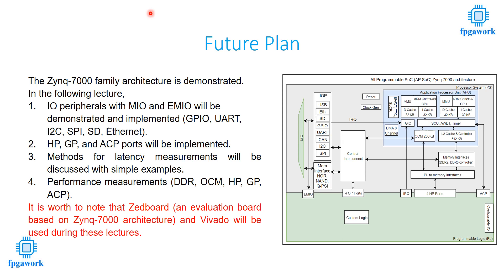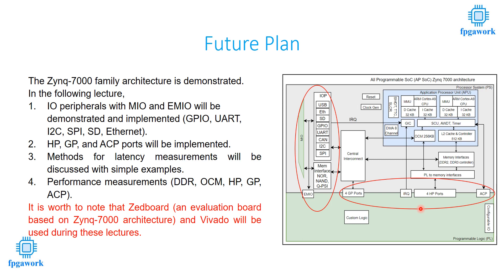This is my future plan: I am planning to divide my implementation into four parts. In the first part, I will implement all the IO peripherals — this will take many days since there are many peripherals to explain and implement. In the second part, I will implement all the PS-PL interfaces with examples, as these interfaces have different AXI communication channels: AXI Lite, AXI Stream, and AXI Full.